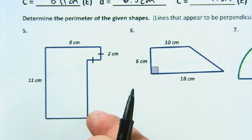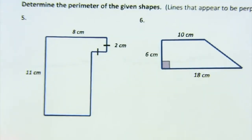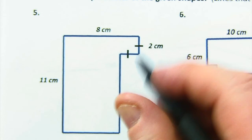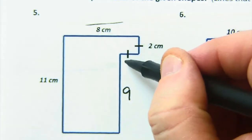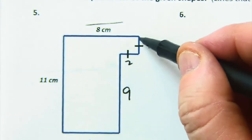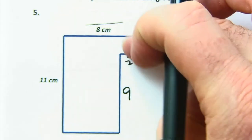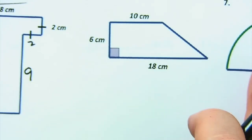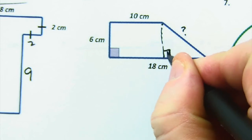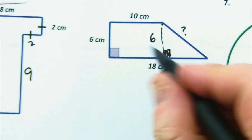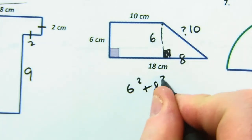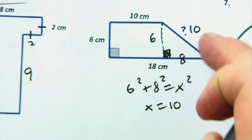Now let's look at perimeter tricks for composite shapes. One trick is when you're given a full-length side and a partial — so 11 minus 2 is 9 here, and 8 minus 2 would be 6 there — then you add all sides up. Since the sides are parallel and perpendicular, you can deduce missing lengths. A trickier one has a missing hypotenuse, but the Pythagorean theorem helps: if one leg is 6 and the other is 8, then 10 minus 18 minus 10 gives 8 and 6, and the hypotenuse is 10. Then you add everything up.